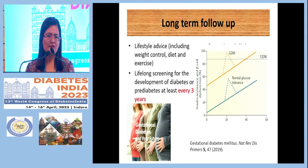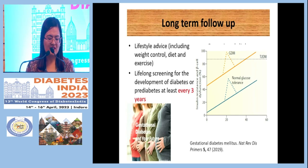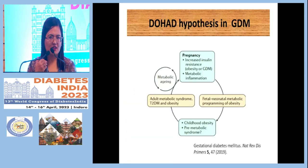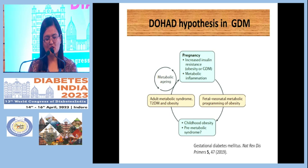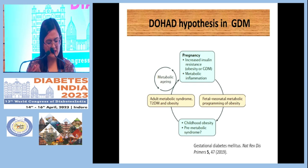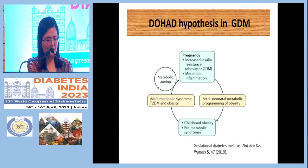Long-term follow-up of GDM is important. Lifestyle counseling is essential as almost 50% of GDM patients can convert to type 2 diabetes. Lifelong screening is required; if screening is negative, the patient should be re-screened every three to five years. There is also the concept of developmental origins of health and disease — childhood obesity can lead to adult metabolic syndrome, and GDM in pregnancy affects the fetus, creating a vicious cycle.